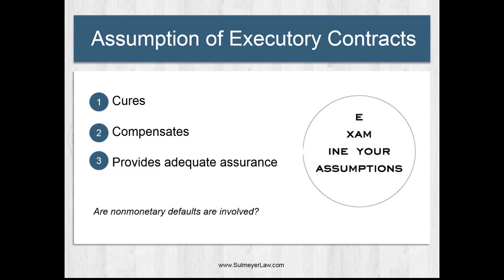Parties to executory contracts seeking to protect their interests in the event of a future bankruptcy should carefully consider the default language in the agreement and may desire to establish material non-monetary default provisions that may be incurable, in order to prevent assumption and/or assignment of an agreement over the party's objection. In preparing license agreements on behalf of either a licensee or a licensor, consideration should be given to defining what constitutes adequate assurance of future performance if the license were to be assigned to a third party in connection with a bankruptcy case.